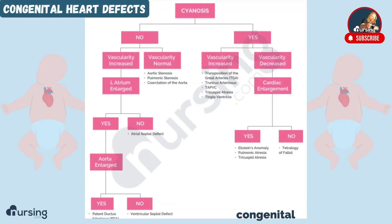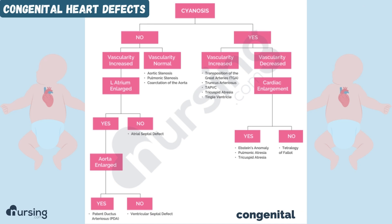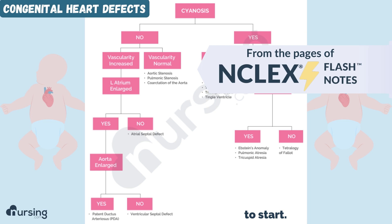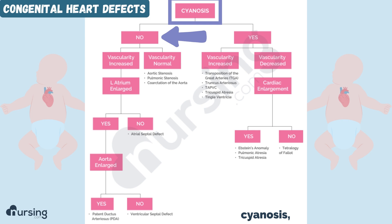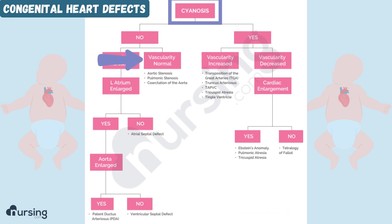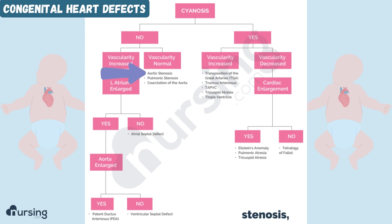Here we are on the congenital heart defects cheat sheet. In order to understand congenital heart defects, the best place to start, as you can see at the top of this flow sheet, is: is there cyanosis or not? Let's start on the no track. If there's no cyanosis, the next thing we'll ask is vascularity increased or is vascularity normal? If vascularity is normal, then it would either be aortic stenosis, pulmonic stenosis, or coarctation of the aorta.